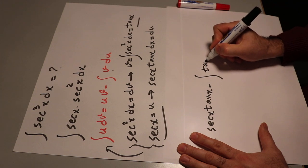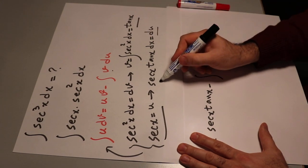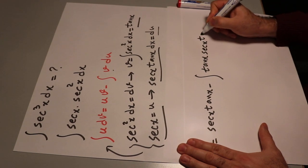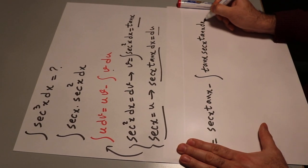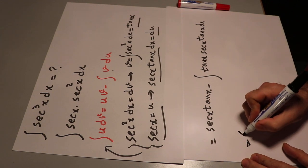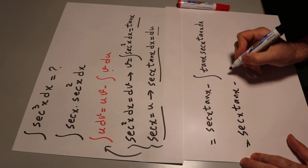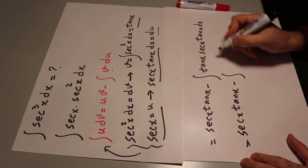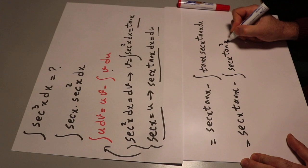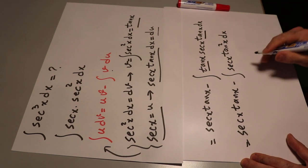That is tangent x times du, and instead of du I have secant x tangent x dx. So this will be equal to secant x tangent x minus the integral of secant x times tangent²x dx, because tangent x times tangent x is tangent²x.